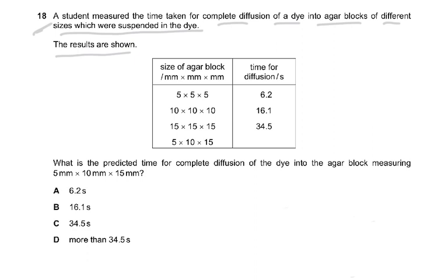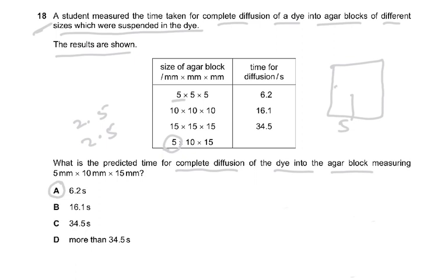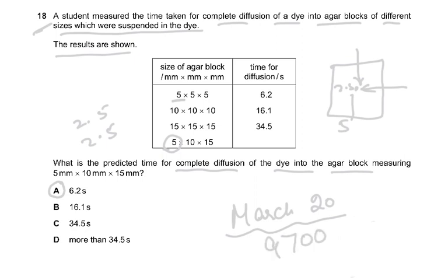Question 18: What is the predicted time for complete diffusion of the dye in an agar block measuring 5×10×15? The answer is A. The key is that the shortest dimension is 5, so the dye only needs to travel 2.5 to reach the center of the block. This is the same distance as in the reference block where the 5mm dimension applies, so it will take the same time — 6.2 minutes. This question has appeared in March 2020 as well; the exam report for 9700 March 2020 contains useful information on it.